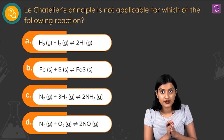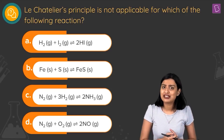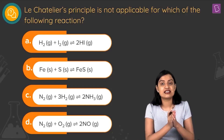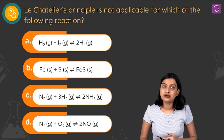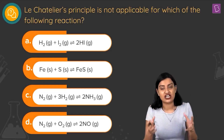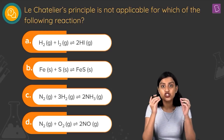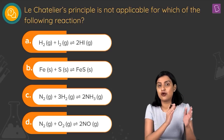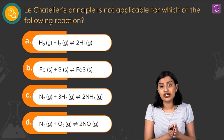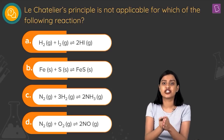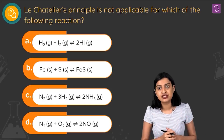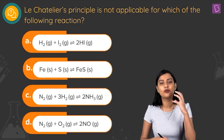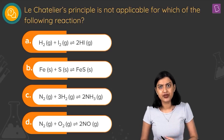Barring option B, all other options have gaseous components. Option B is different — all reactants and products are solid. Le Chatelier's principle states that if you make a change to a system at equilibrium by altering pressure or volume, the system will move to oppose that change and achieve a new equilibrium.